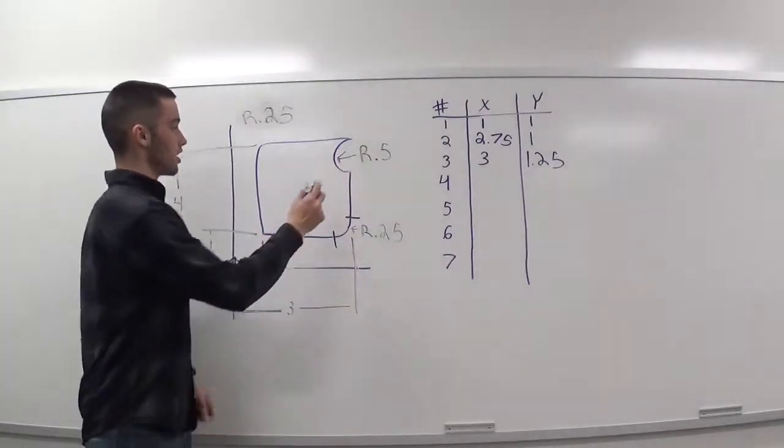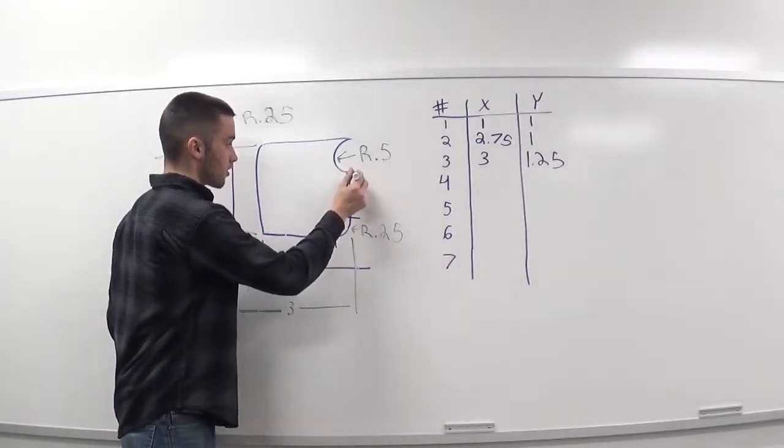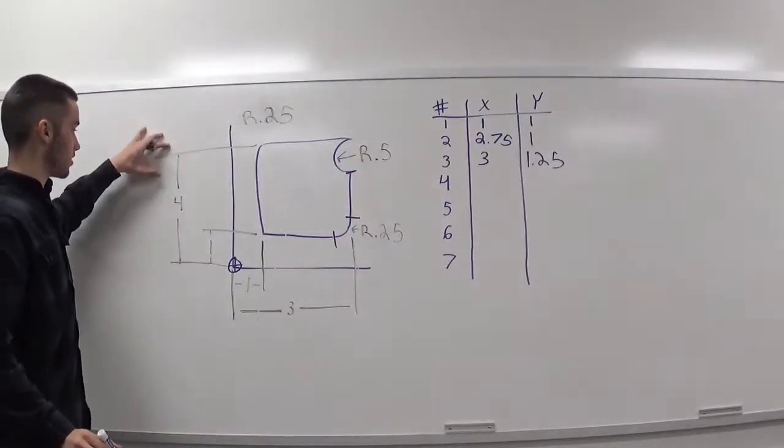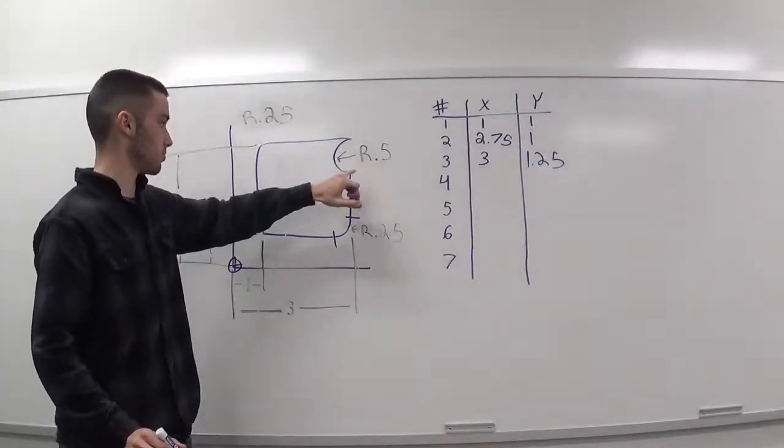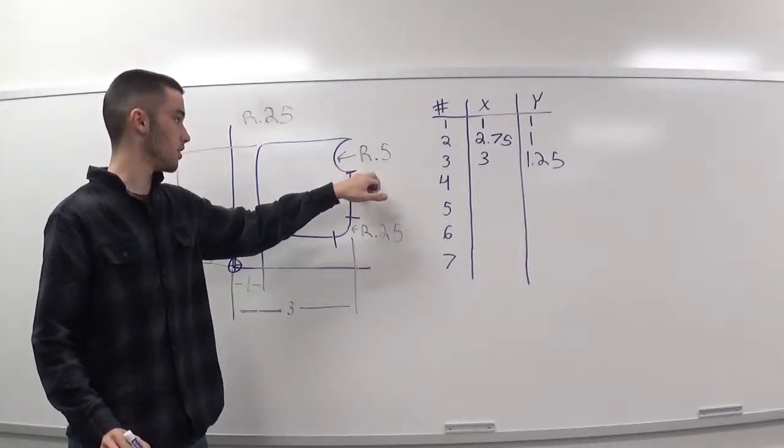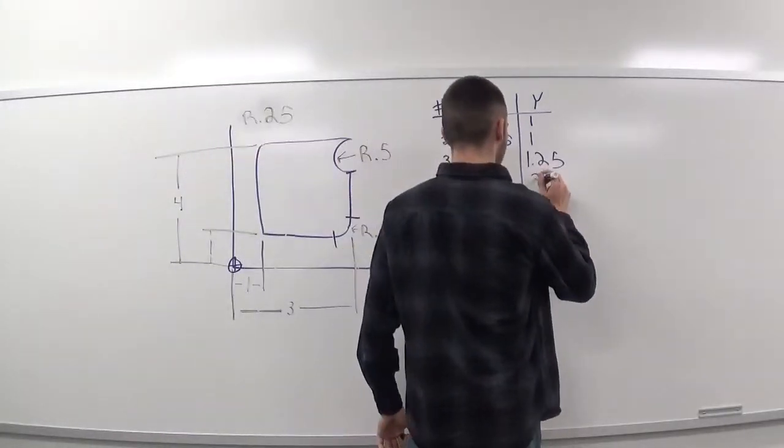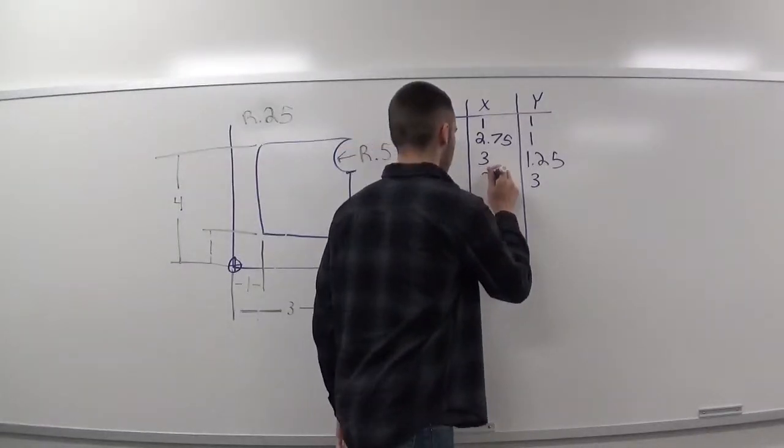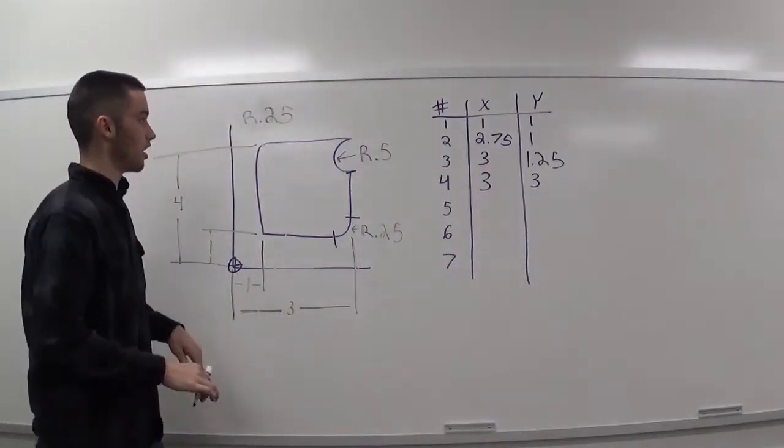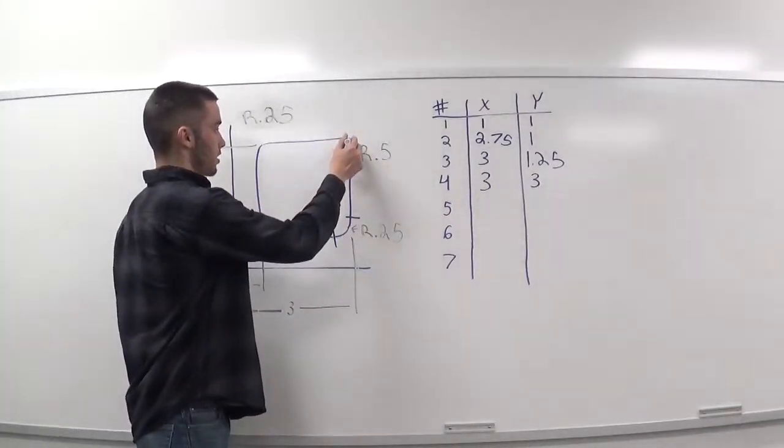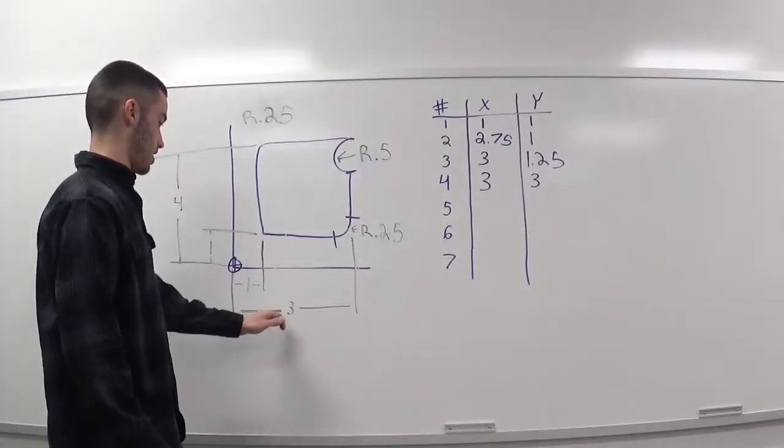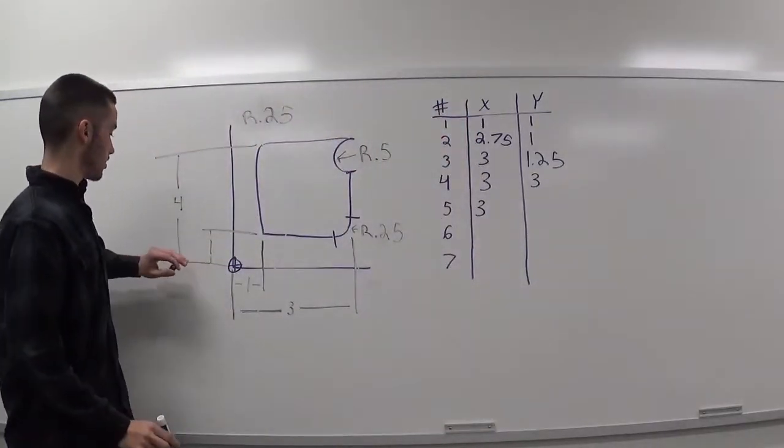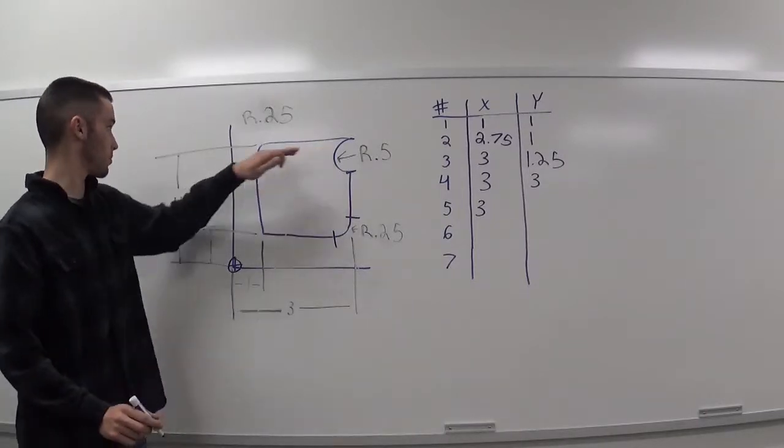And we have our next point, which is right here at the start of this radius with a radius of 0.5. So, from here to the top of the piece, it's four inches. So, the radius of 0.5 there, I'd make this point right here a y of three. And then, our x is also still three. Our next point is the end point of this radius, which is right up here. Our x is still three. And our y is all the way at the top. So, it would be four.